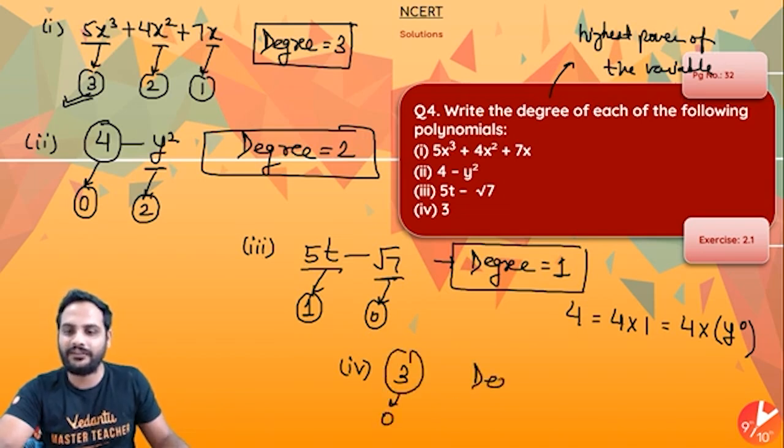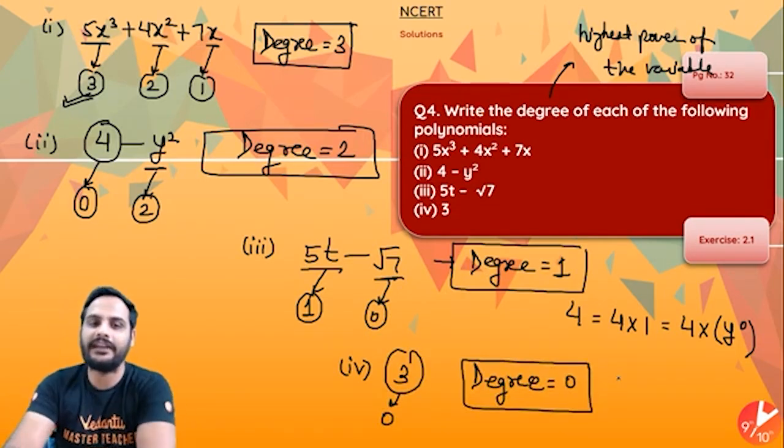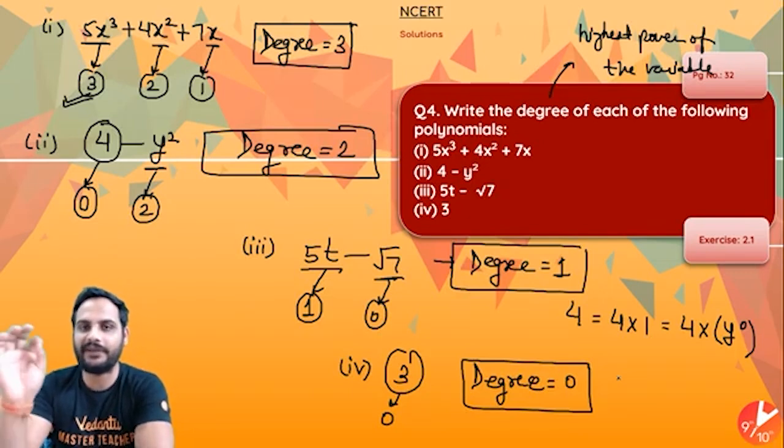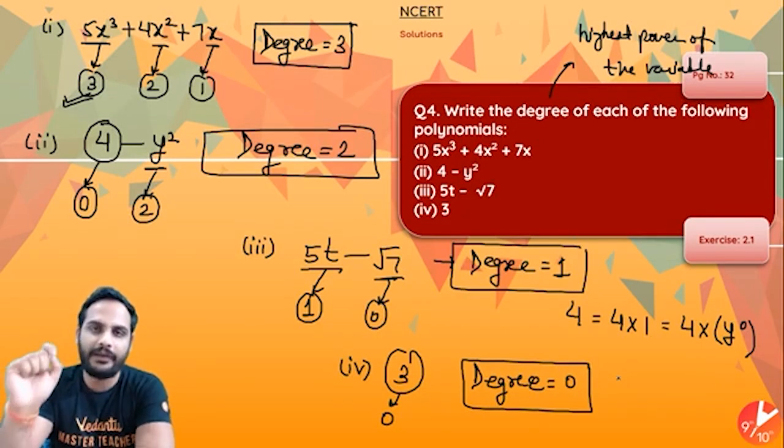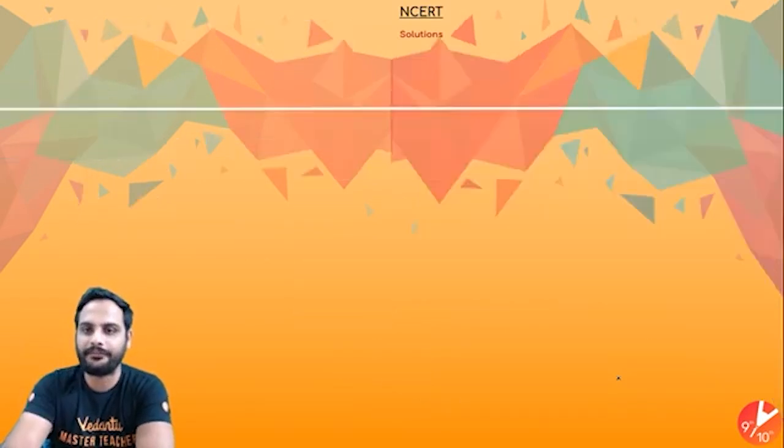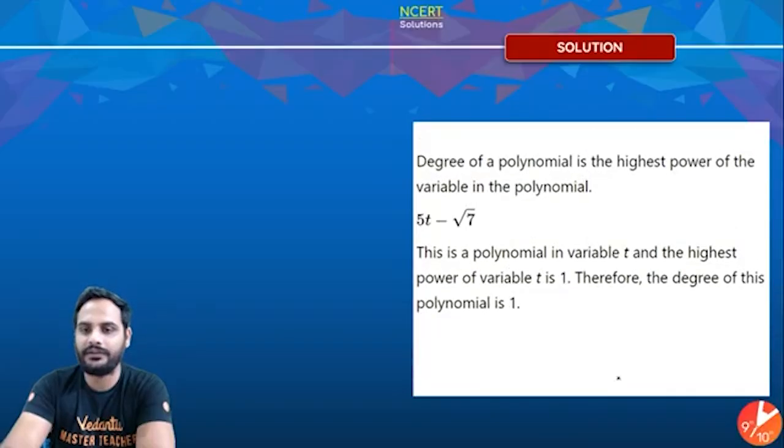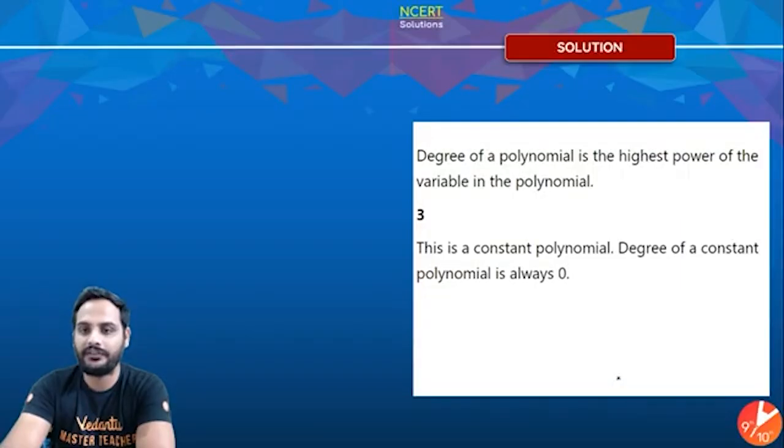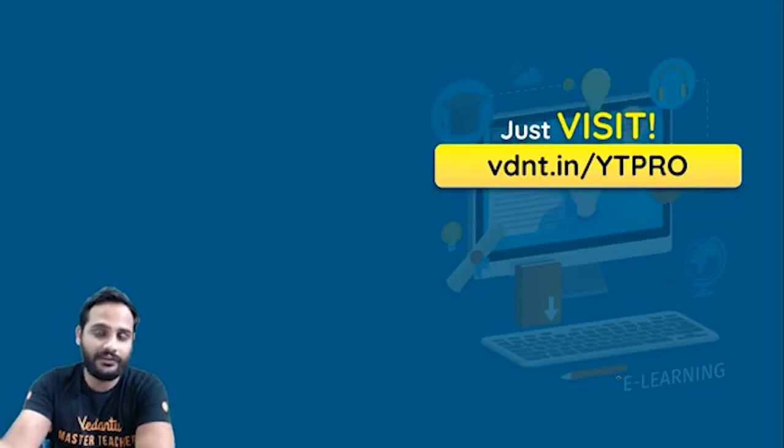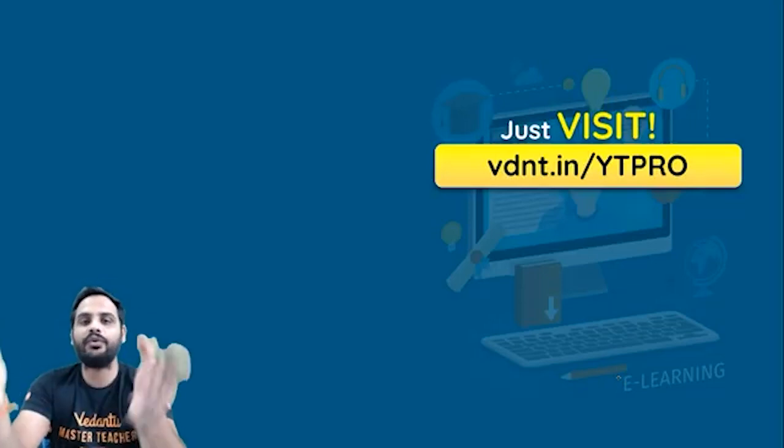These are the degrees of this polynomial. Remember, highest power of the variable, and if there is any constant term, the variable's power will be 0 in that case. So this is 3, 2, 1, 0 is the power of the variable. Last one is a constant polynomial.